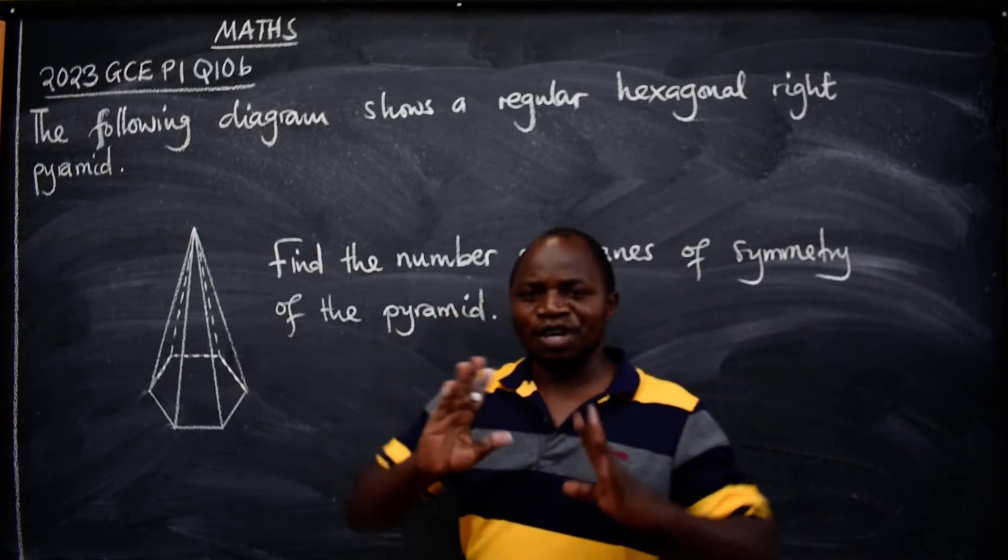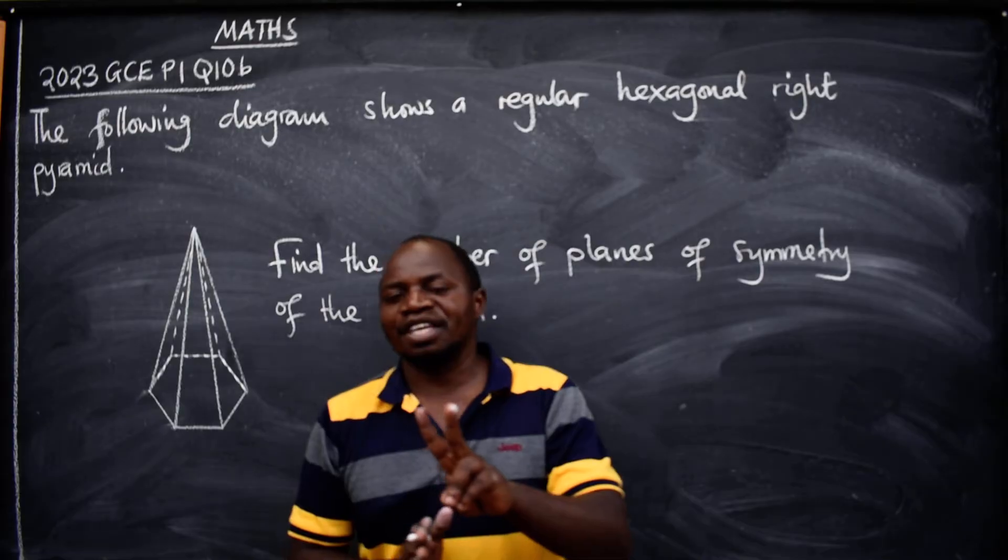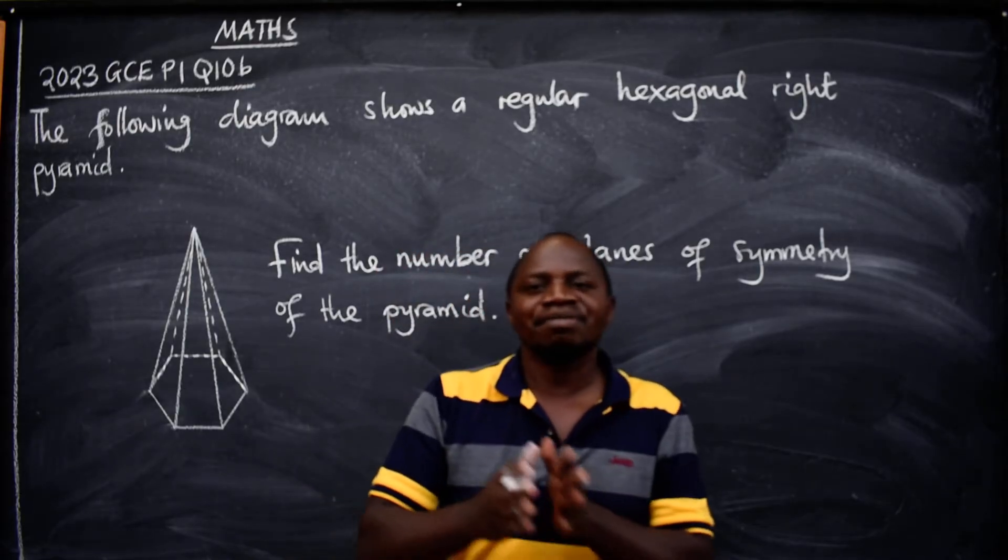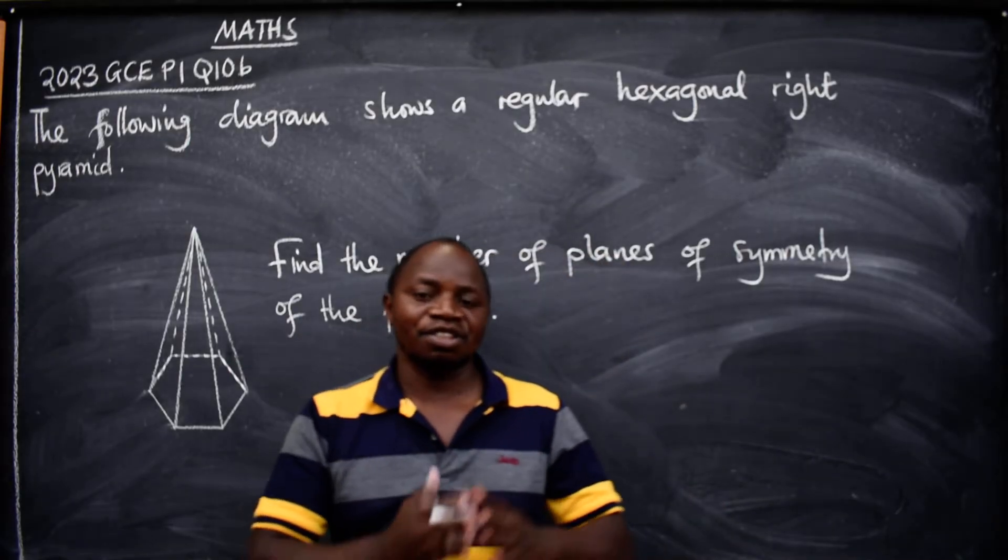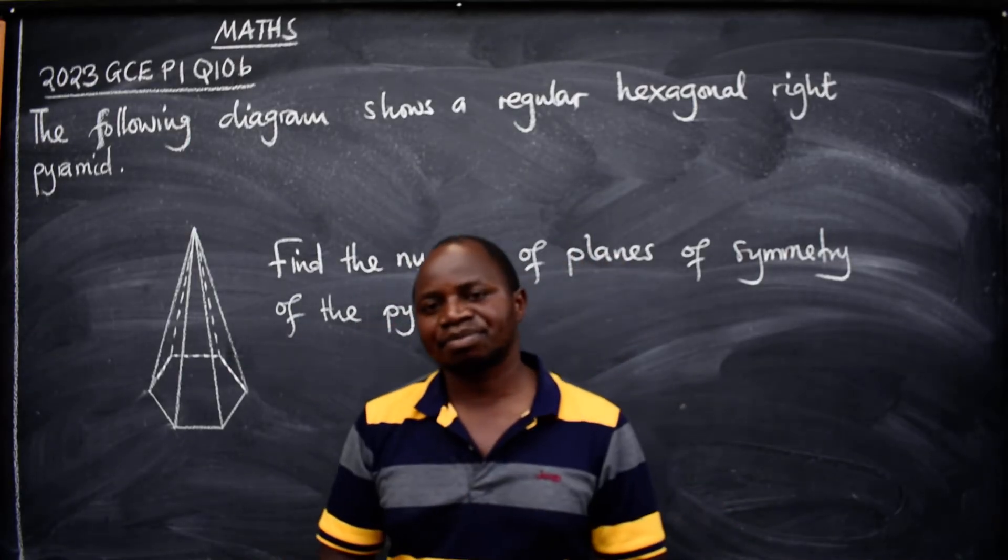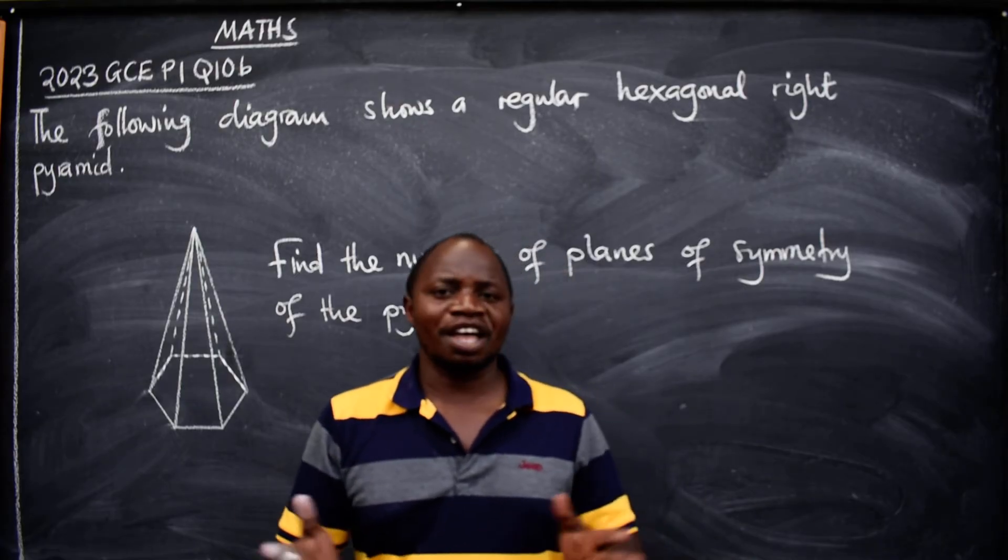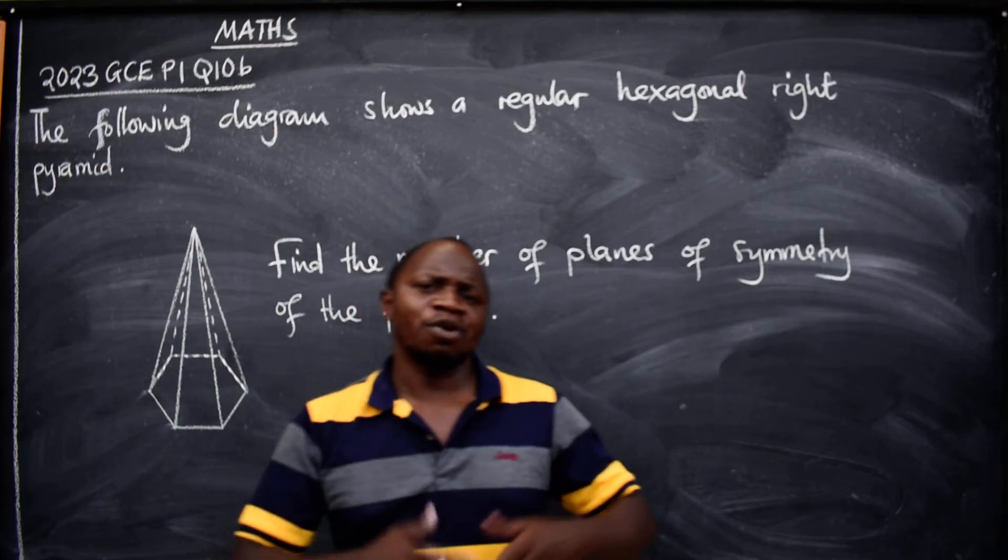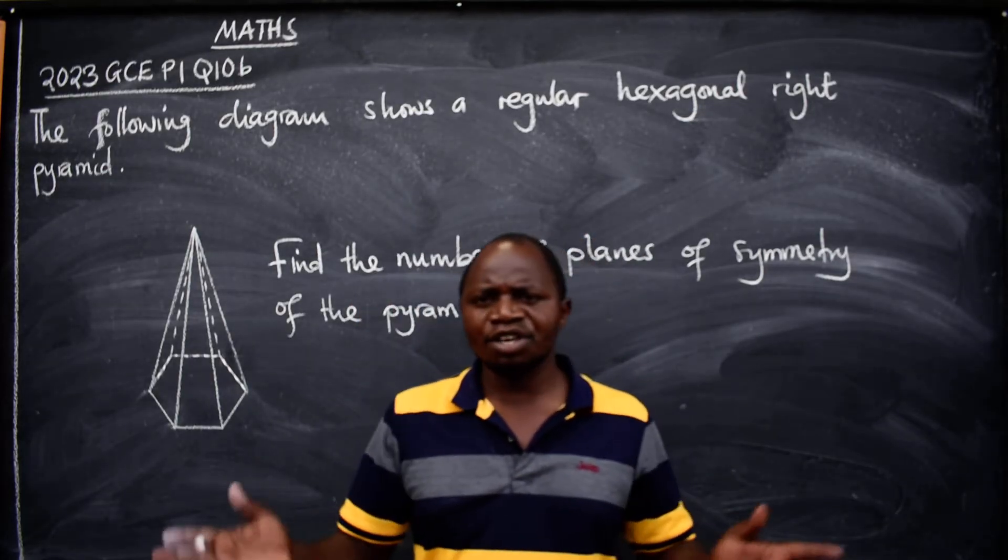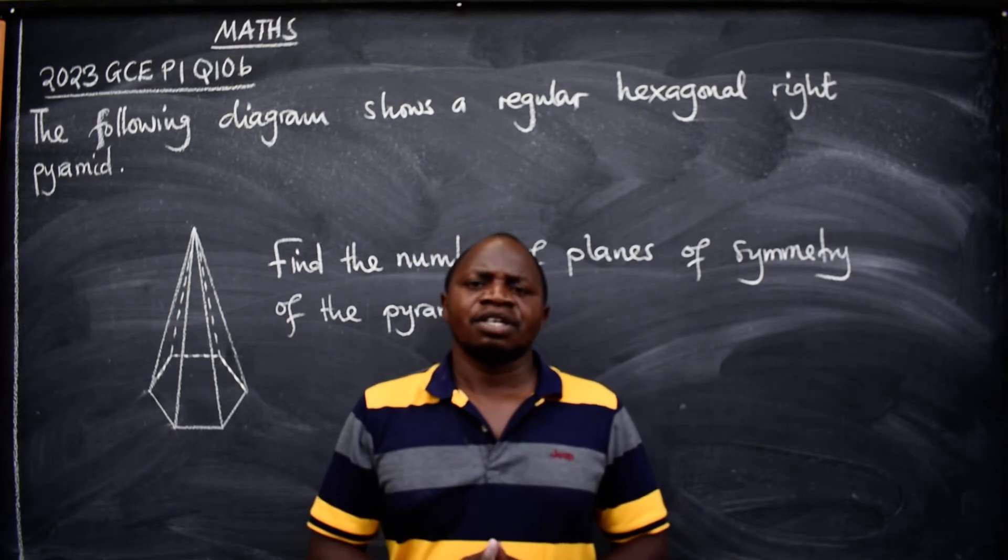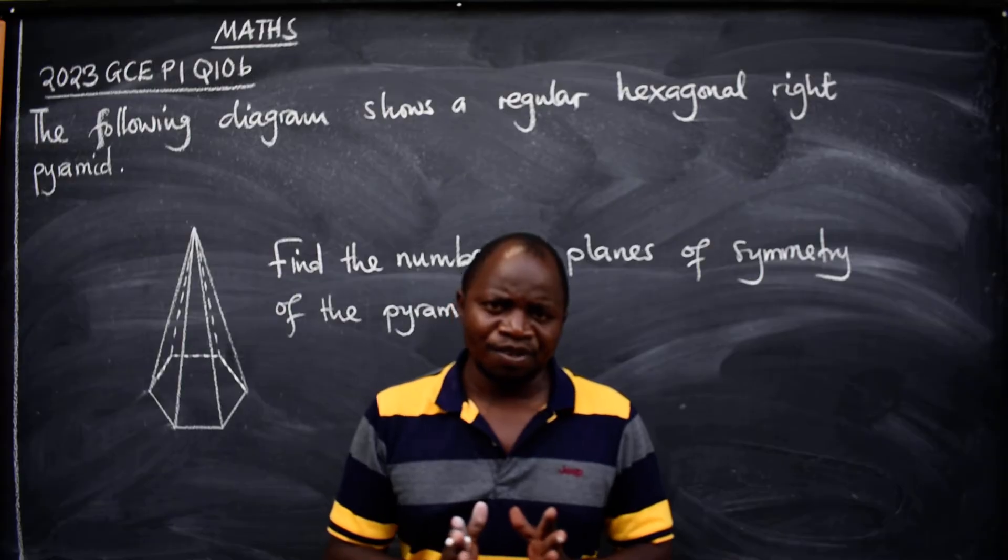Now when you are looking at this topic symmetry, you have to take note that we have 2D shapes and 3D, meaning two-dimensional shapes that have got length and width like rectangle, triangle, square—those are 2D. We also have 3D like the pyramid, sphere, cube, cuboid—all those are 3D objects.